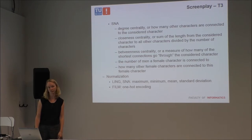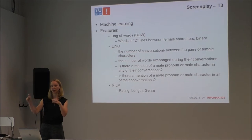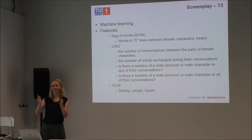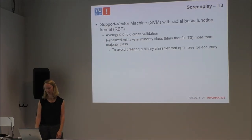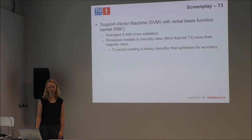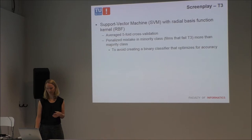The normalization used for the film features was one-hot encoding. One-hot encoding means, for example for the rating, you have a G rating and a PG rating and you create yes/no binary features for each — otherwise you'd get an unintended scaling effect by treating them as ordered numbers. I then used a support vector machine with an RBF kernel and average five-fold cross-validation to determine which features worked best. I needed to penalize mistakes on the minority class because I had more films that passed than failed, so I used class weighting rather than optimizing for accuracy.